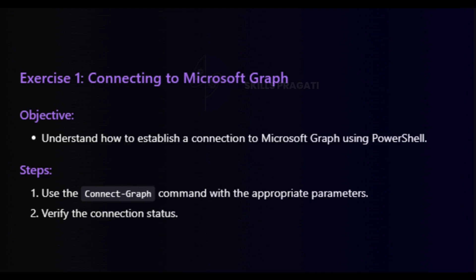Exercise 1: Connecting to Microsoft Graph. The objective is to understand how to establish a connection to Microsoft Graph using PowerShell. Execute the Connect-Graph command with the appropriate parameters and verify the connection status.